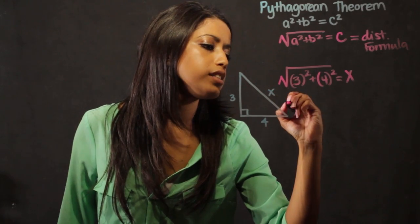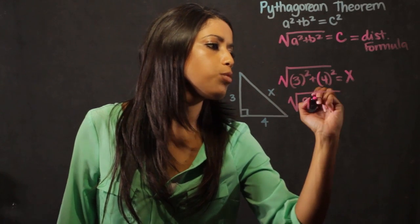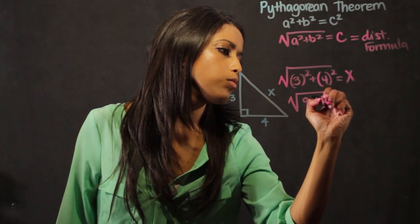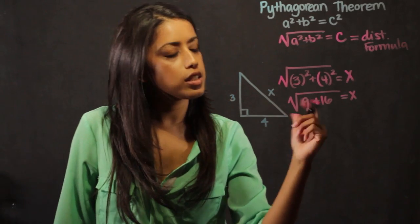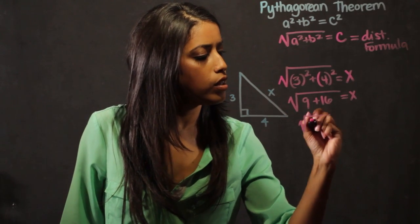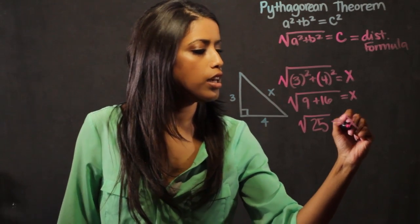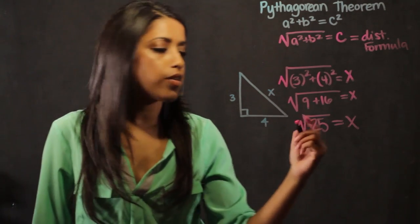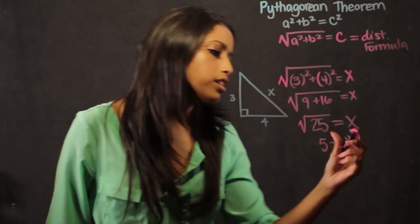So I simplify this out. 3 squared is 9, 4 squared is 16. 9 plus 16 is 25, so the square root of 25 equals x. When I take the square root of 25, it's the number 5. So I know that x equals 5.